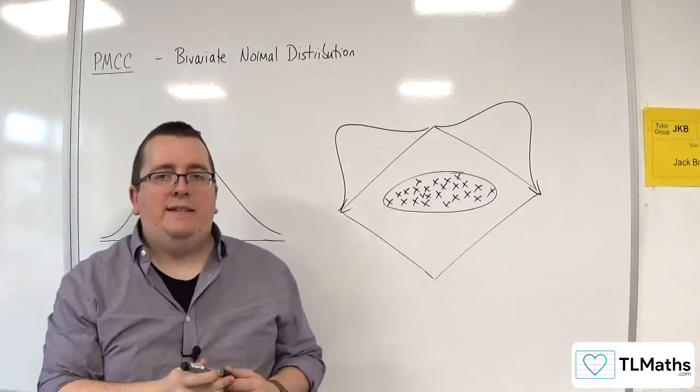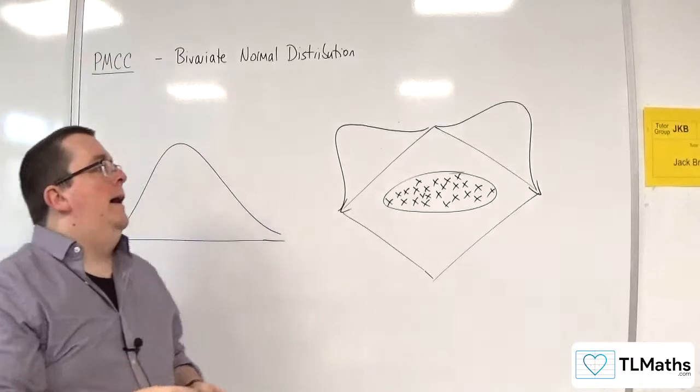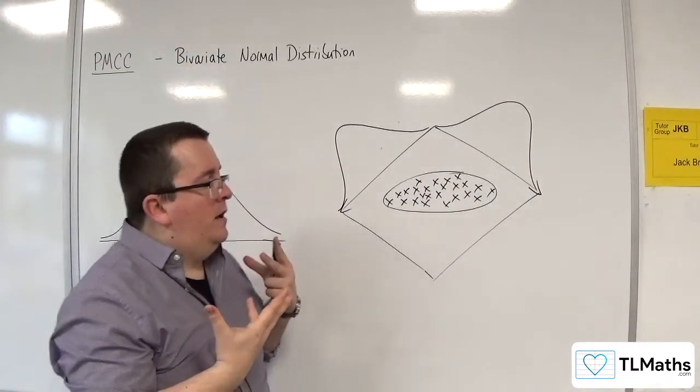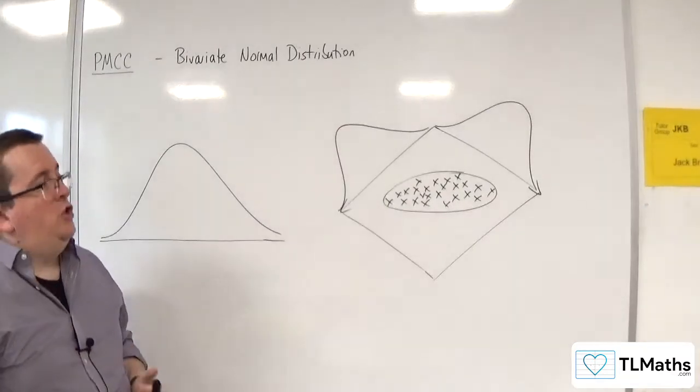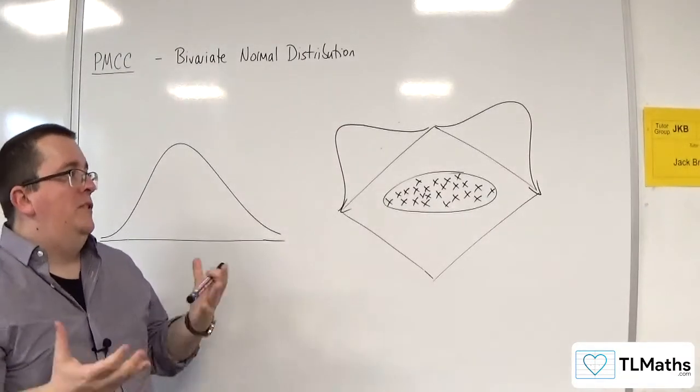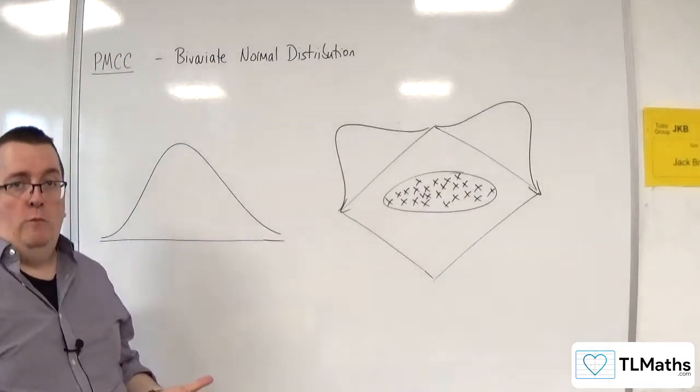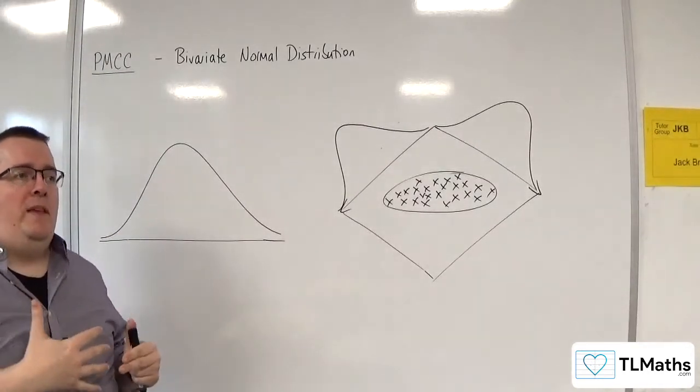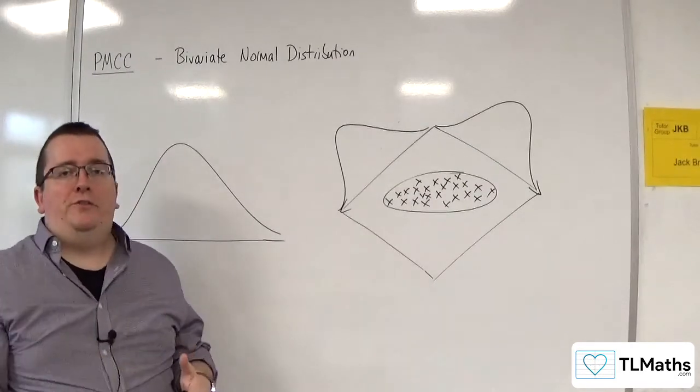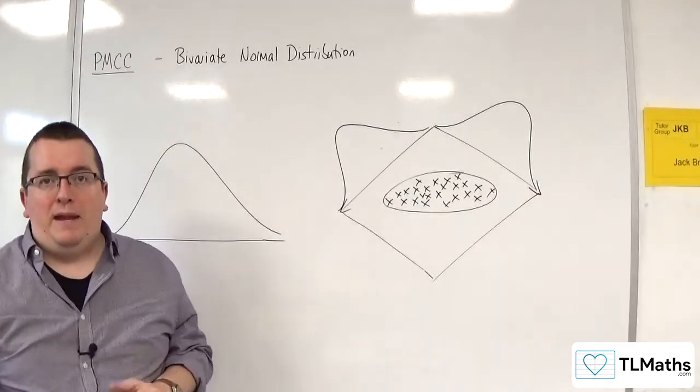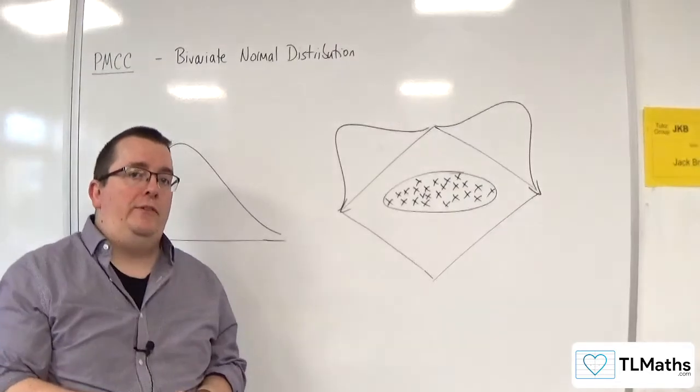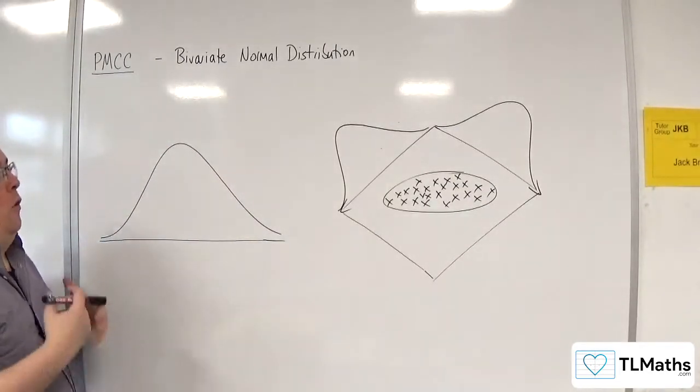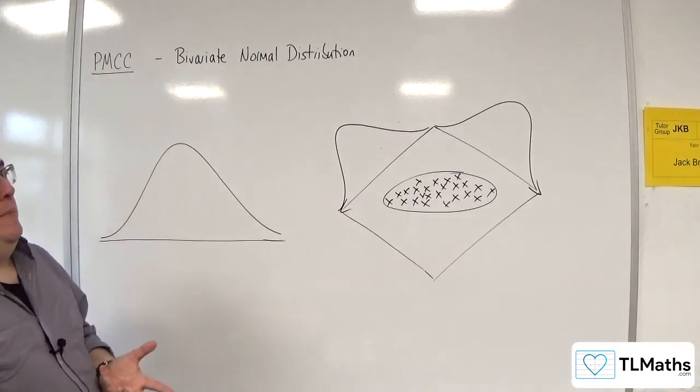So if the data is roughly elliptical, then you've got evidence to suggest that the data is bivariate normal, which is what you need to have in order to conduct a PMCC hypothesis test, which is where we will be going on to later. So this is what we mean when we're talking about bivariate normal.